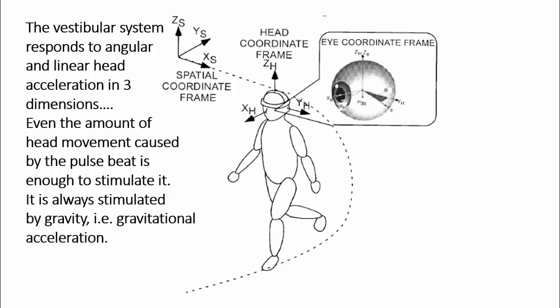One of the most important sources of information about self-motion is the vestibular system, located in the inner ear, which responds to angular and linear acceleration in three dimensions. It's so sensitive that even the amount of head movement caused by the pulse beat is enough to stimulate it, meaning it's being stimulated by all kinds of inadvertent head movements as we walk down the street. In addition, and very importantly, it's always stimulated by gravitational acceleration as long as we're on Earth.